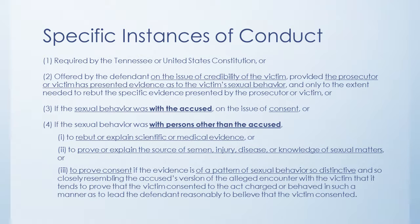The fourth exception is when the defendant wants to talk about the sexual behavior of the victim with other people — other than the accused. This is usually the one that defendants are most eager to introduce. They'll say, 'hey, this girl would have sex with anybody.' But that's exactly what the Rape Shield Law is intended to prevent, so this is probably the stickiest area.